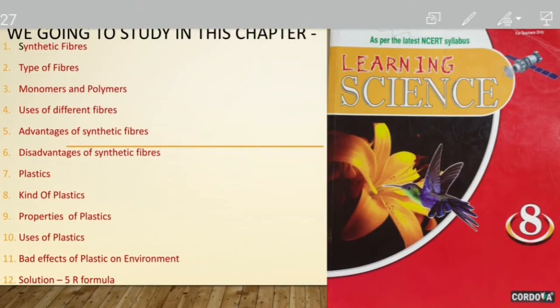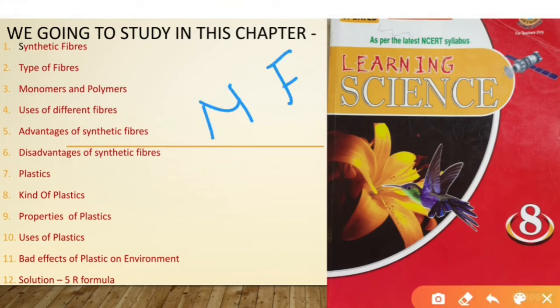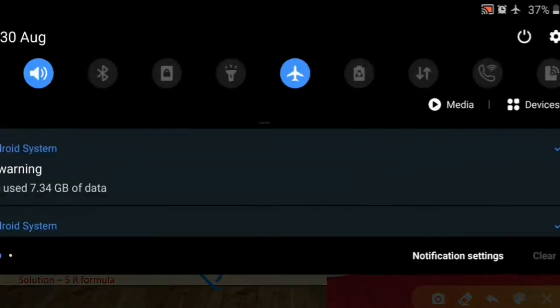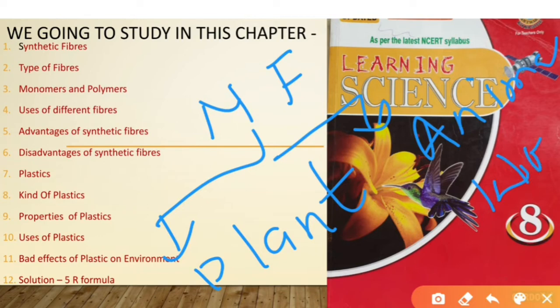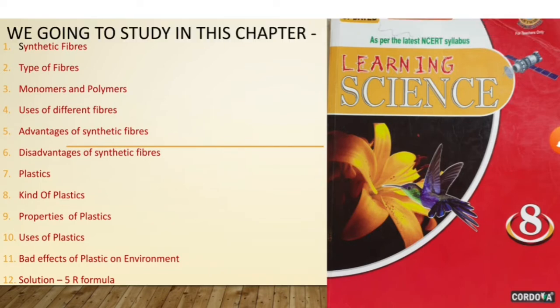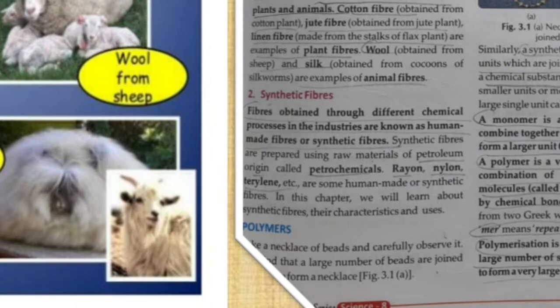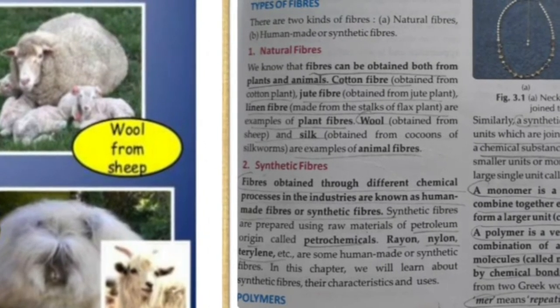What are the examples of natural fibers? Natural fibers may be of two types: they may come from plants or from animals. Animal fibers include wool, which comes from sheep, and silk from the silkworm. Plant fibers include cotton, jute, and linen. From your book you can see: wool and silk are animal fibers, while jute, cotton, and linen are plant-based natural fibers.